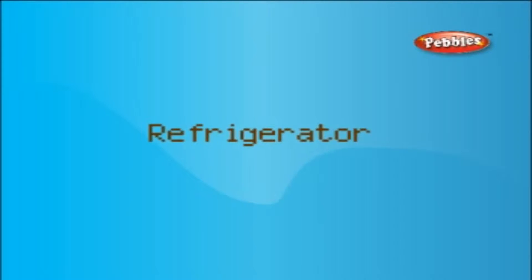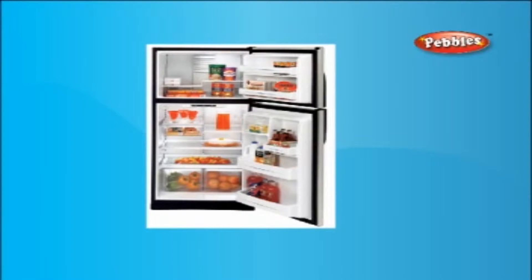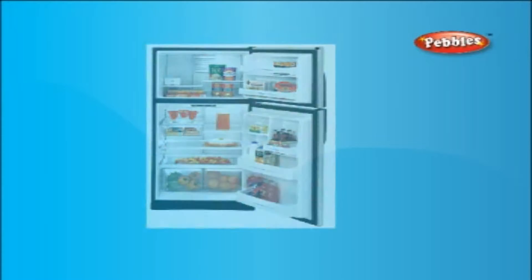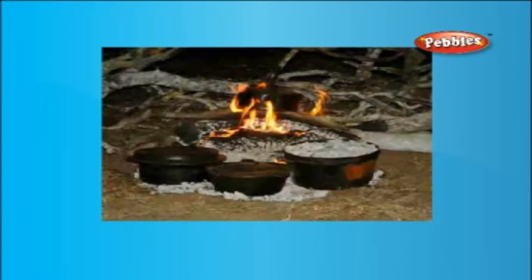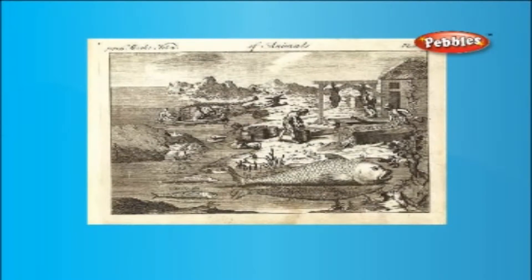Refrigerators. Ever since ancient times, people have preserved their foodstuffs by boiling, cooking, drying, or cooling. To keep provisions fresh by cooling, people used to place large blocks of ice around easily perishable food. This was the first basic concept of the refrigerator.